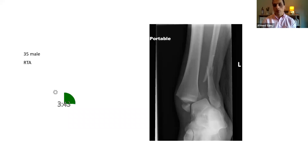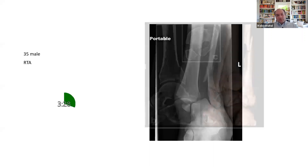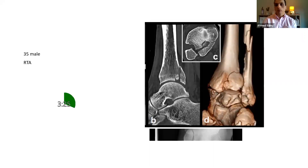I'll obtain post-reduction radiographs — AP and lateral views — and document the neurovascular status of the limb after the reduction. The ankle has been reduced; the patient is neurovascularly intact before and after. The skin is swollen around the ankle but there are no cuts or blisters.